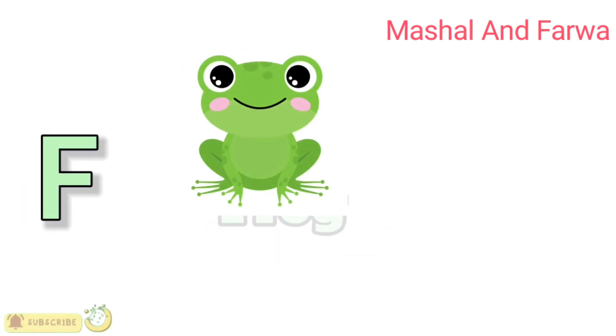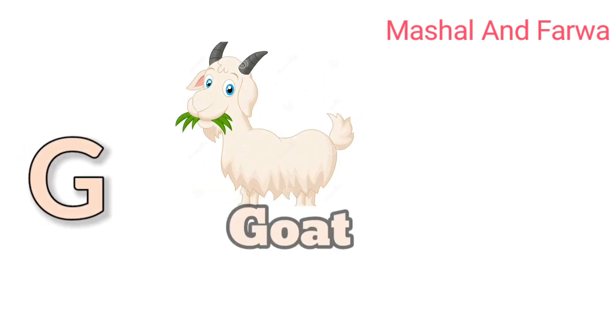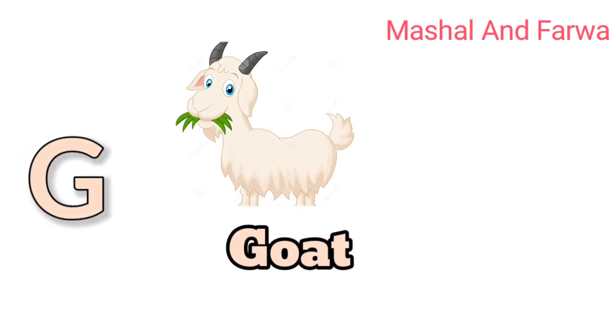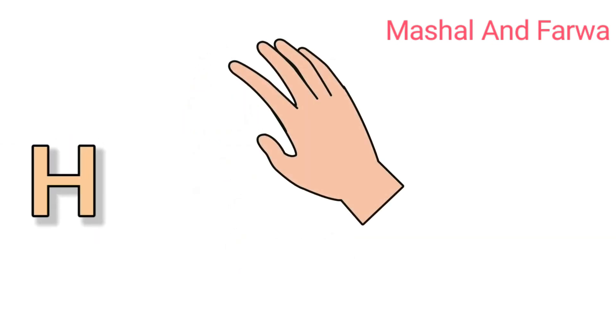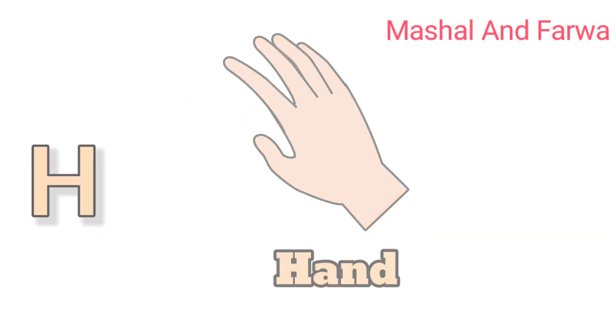F is for frog, f-f-f-frog. G is for goat, g-g-goat. H is for hand, h-h-hand.